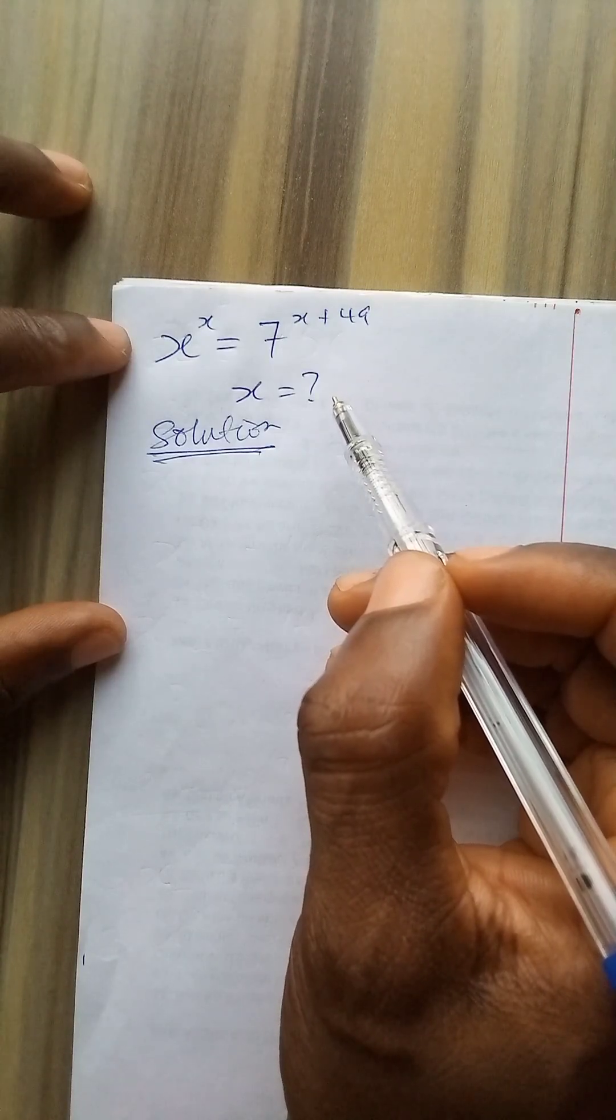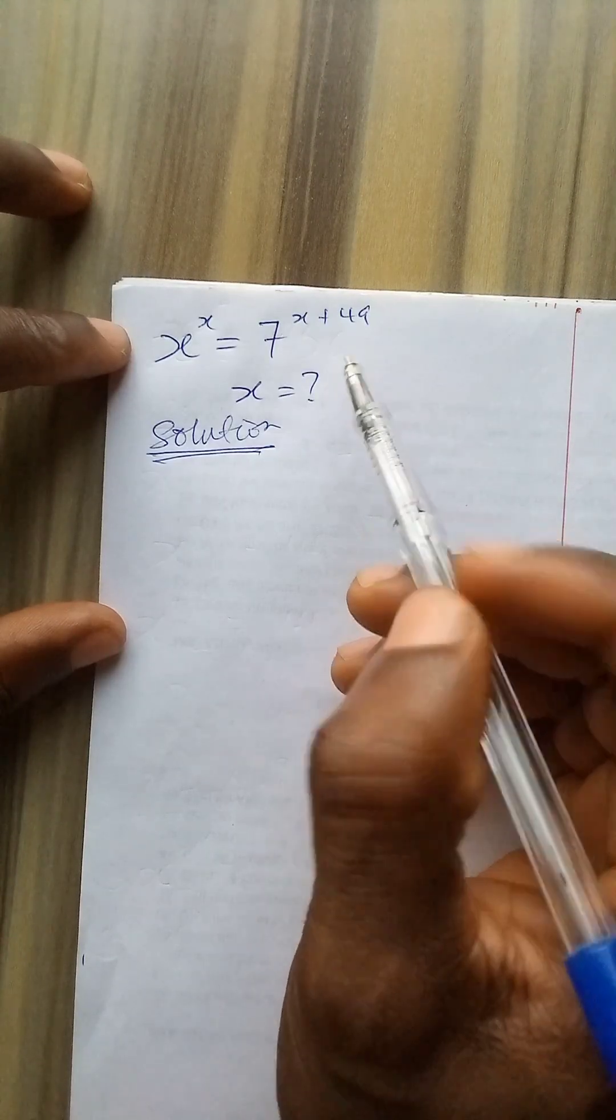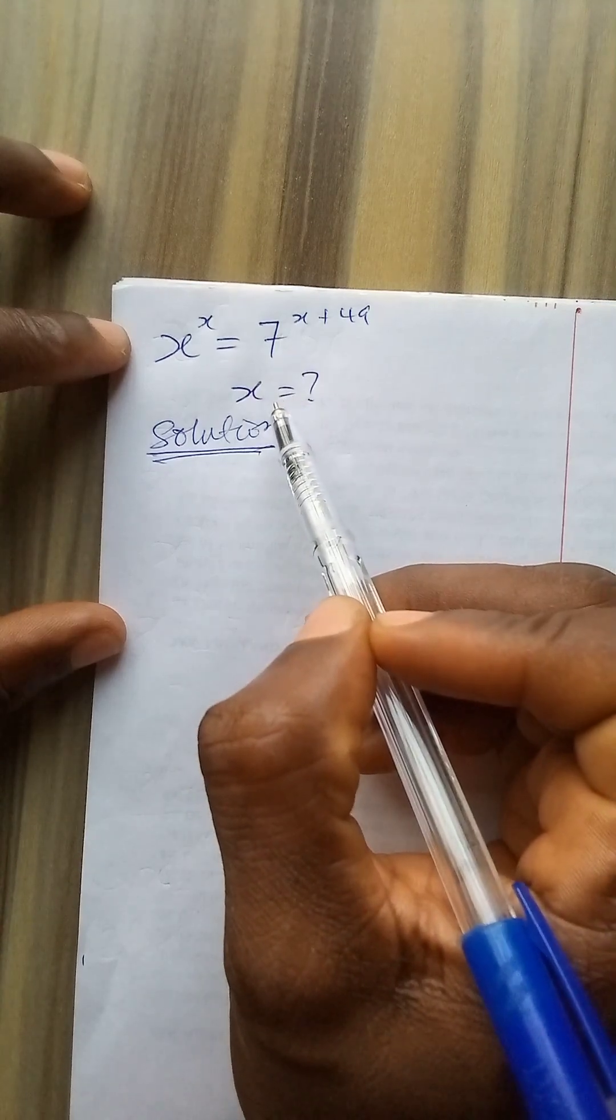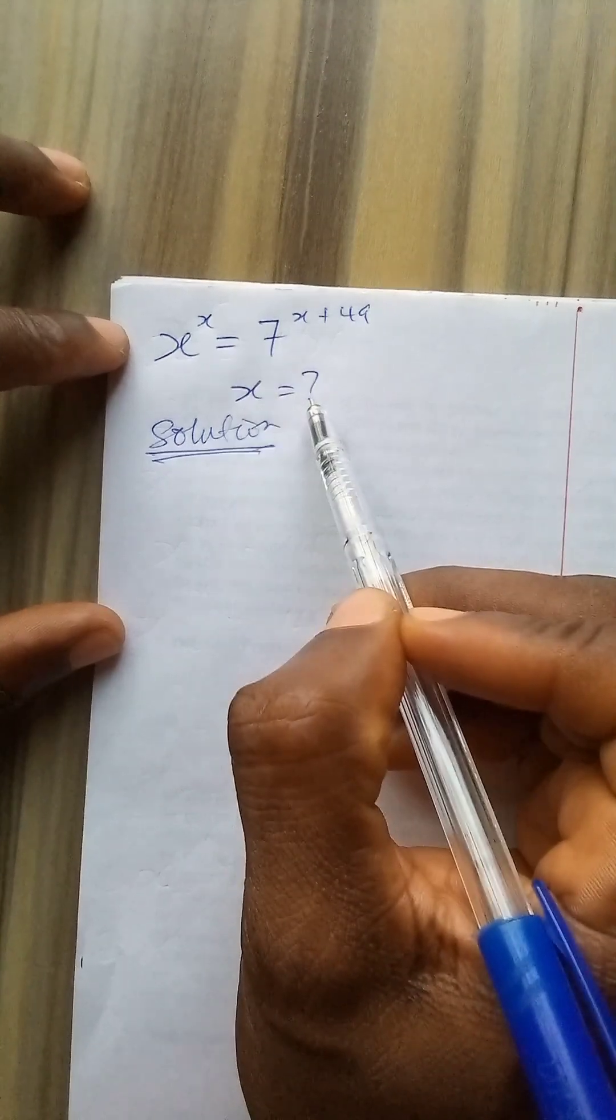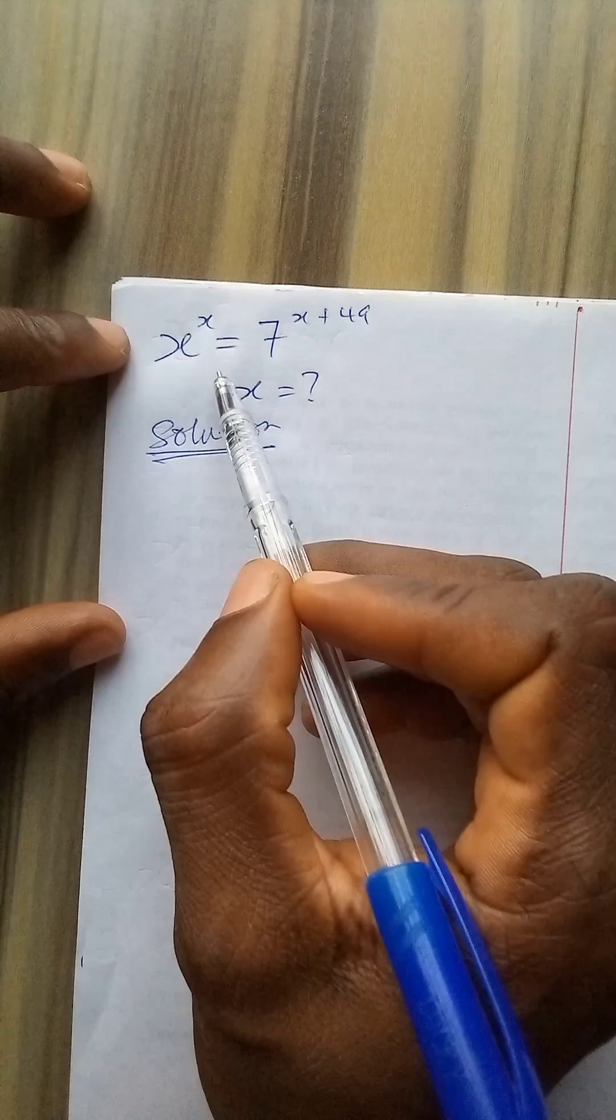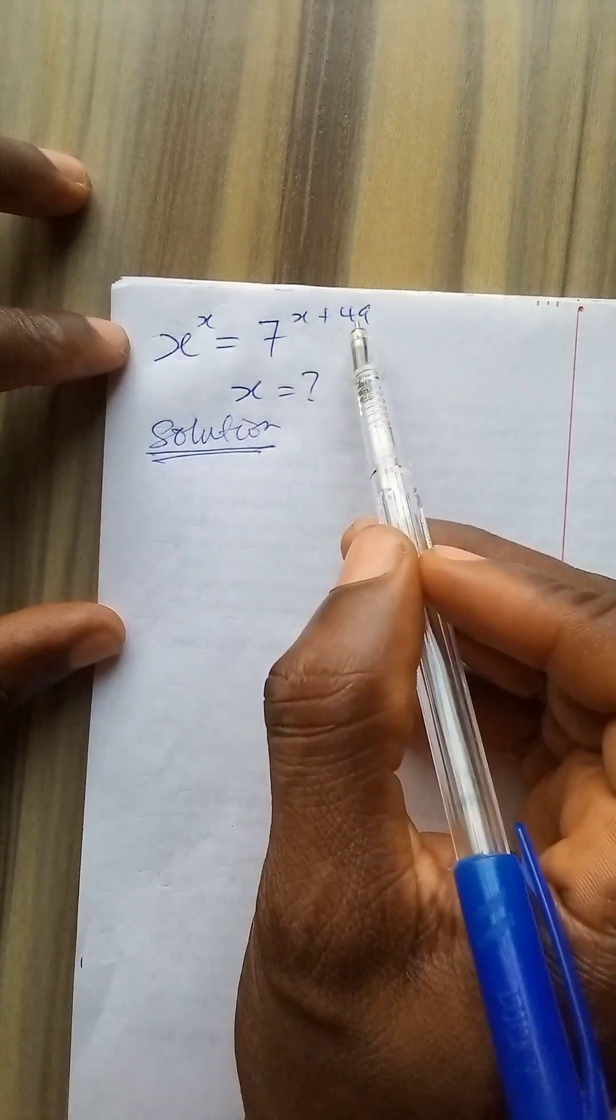Hello everyone and welcome to another video on my channel. In this video we are required to find the value of x given that x to the power x is equal to 7 to the power x plus 49.